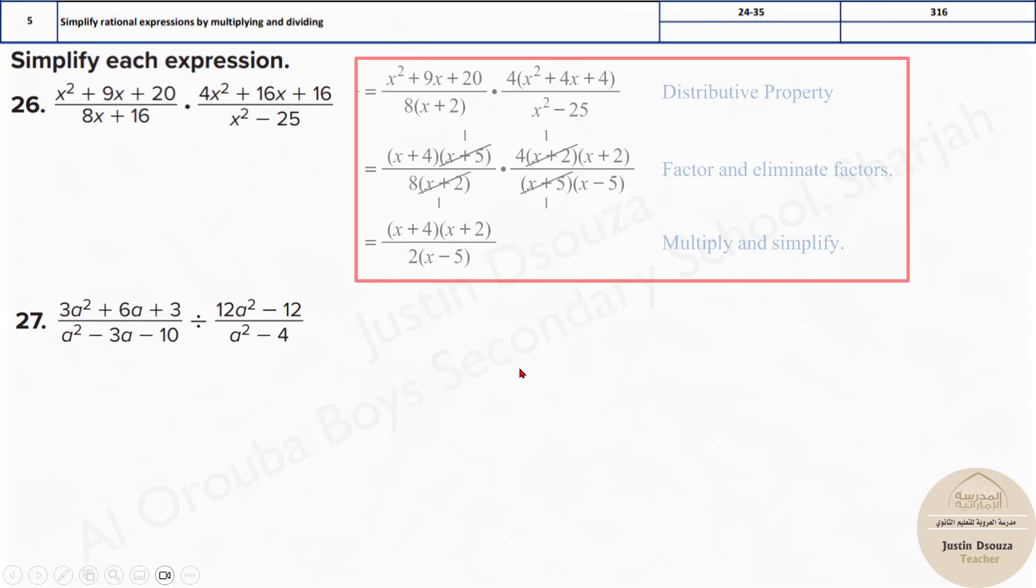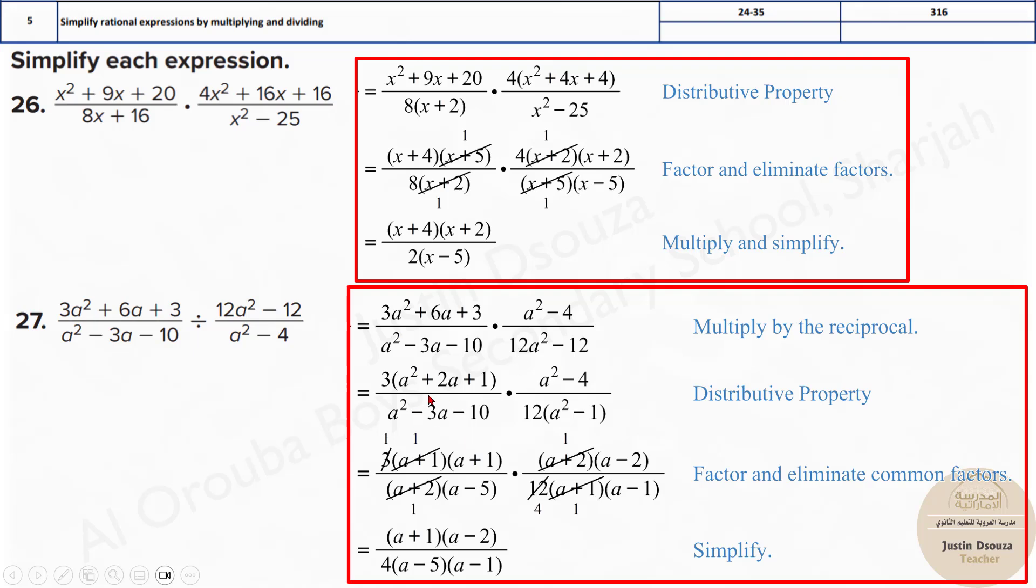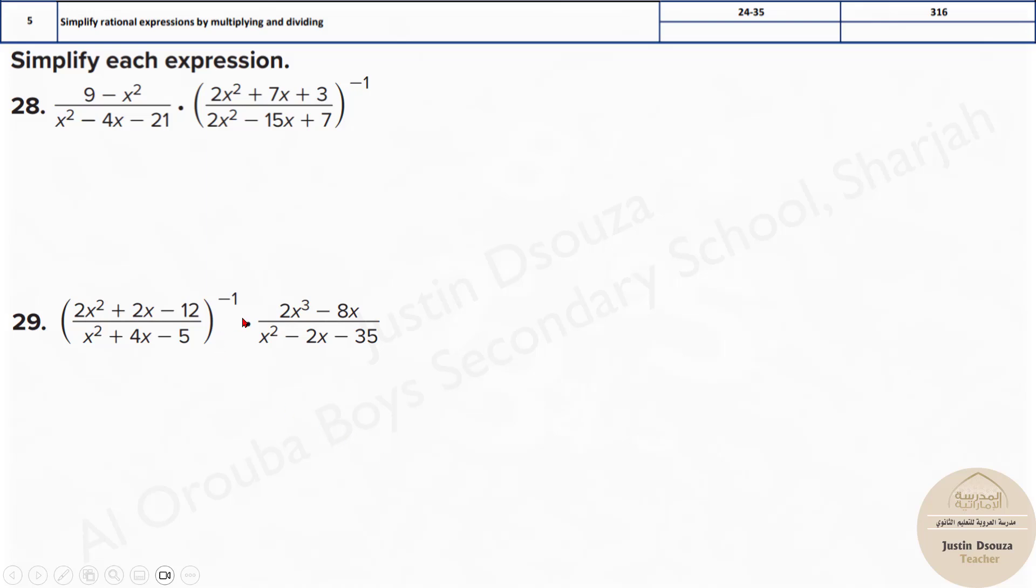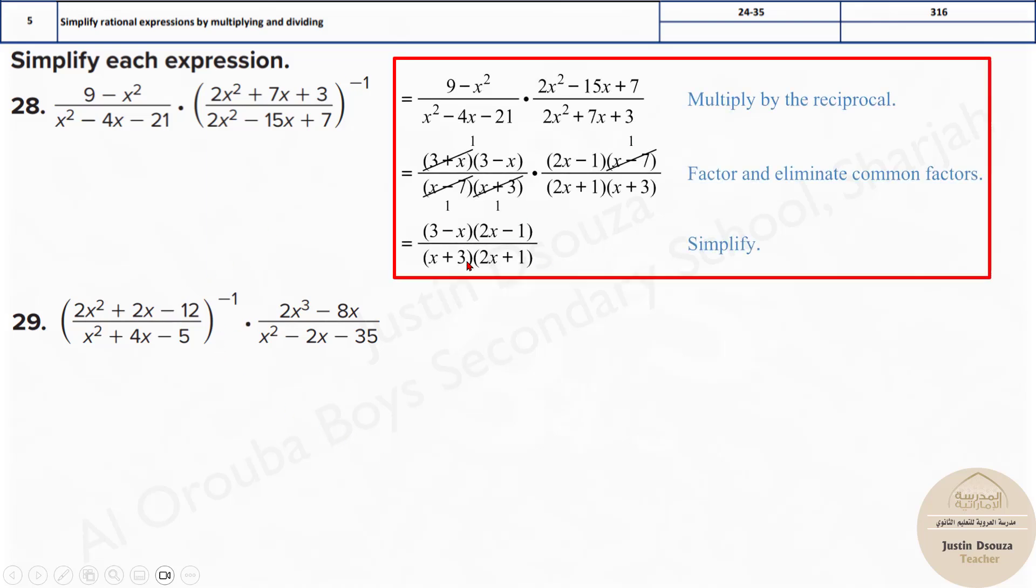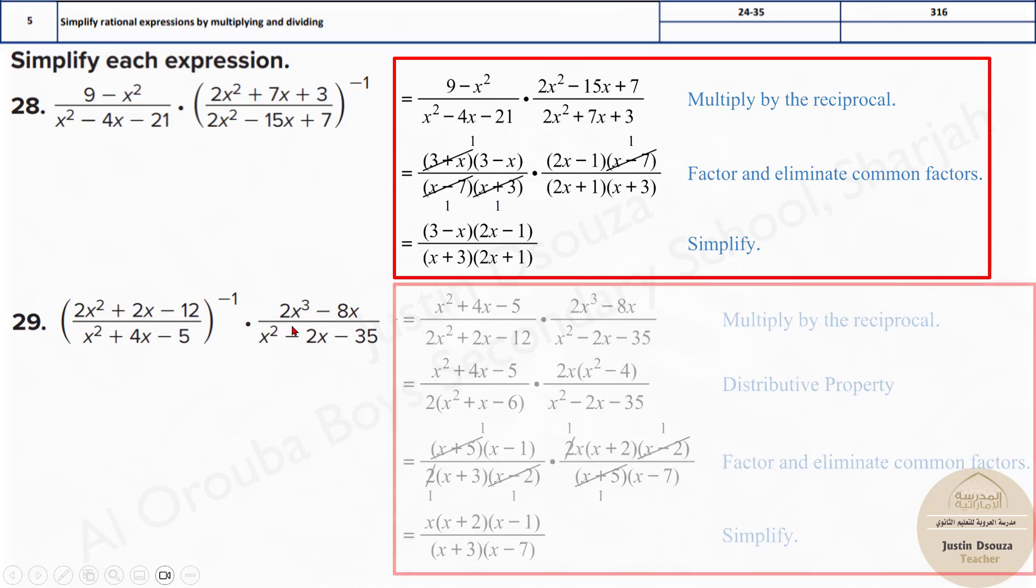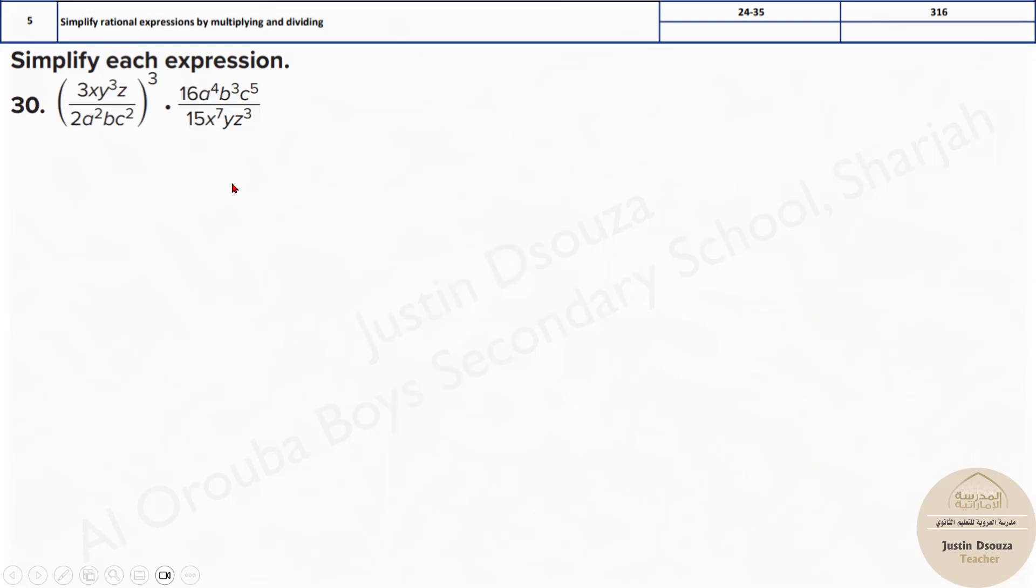You do not need to do any of these long methods. Use your calculator and directly solve it. If you have a single variable, it is very simple. Just assume that variable and put it as alpha x and calc. But if it is any two variables, assume some value.